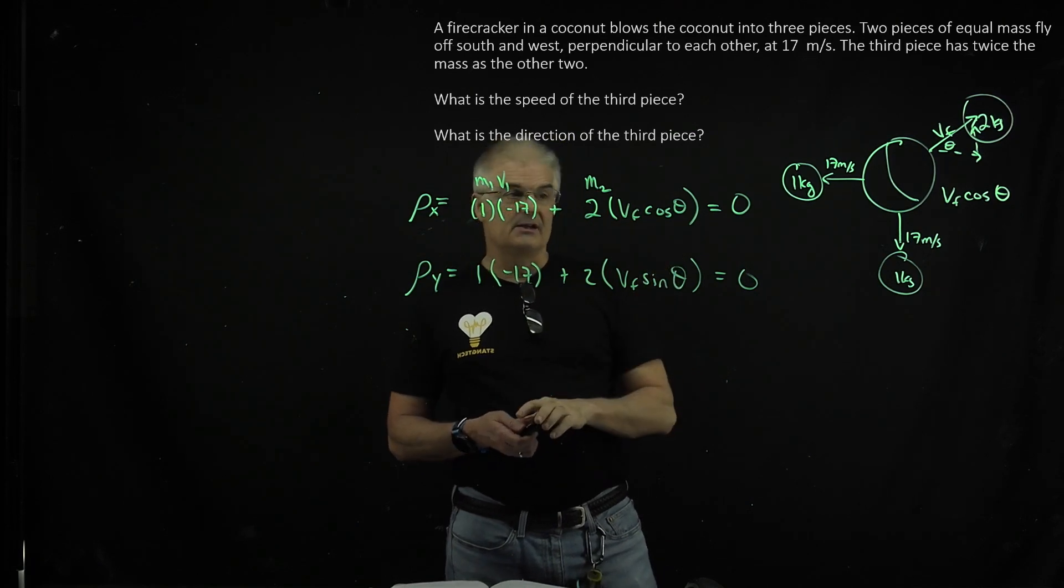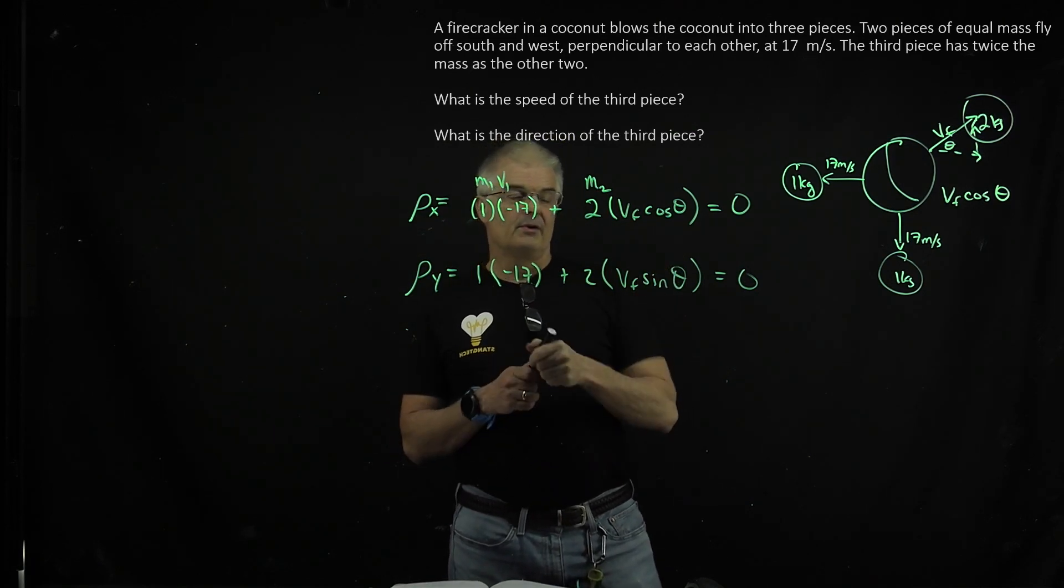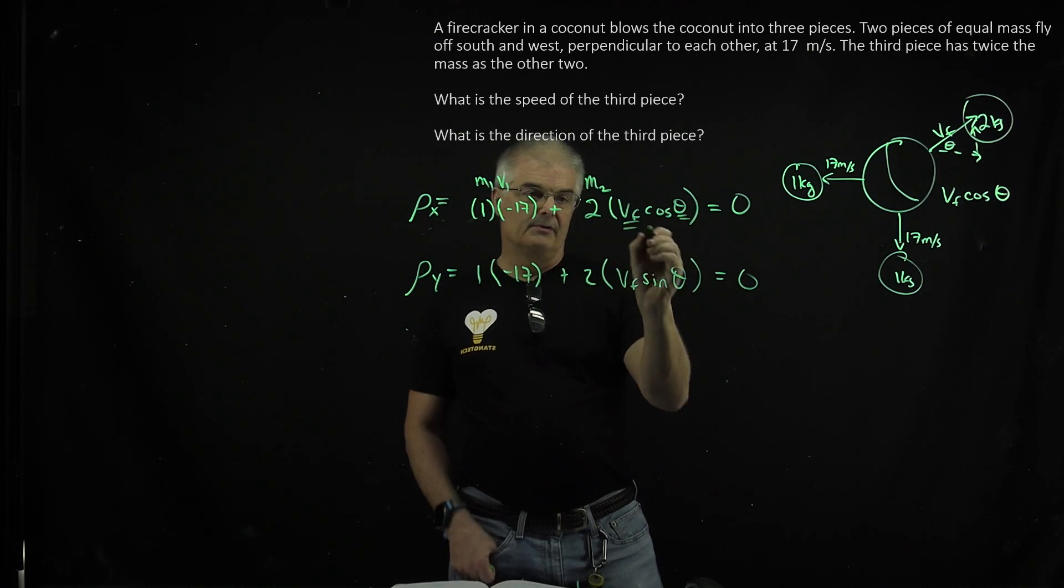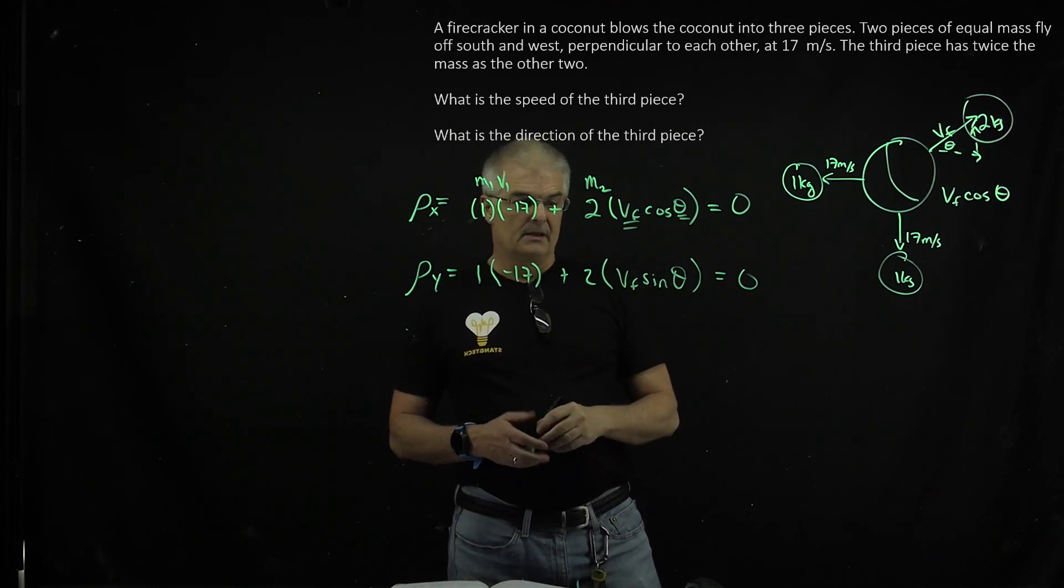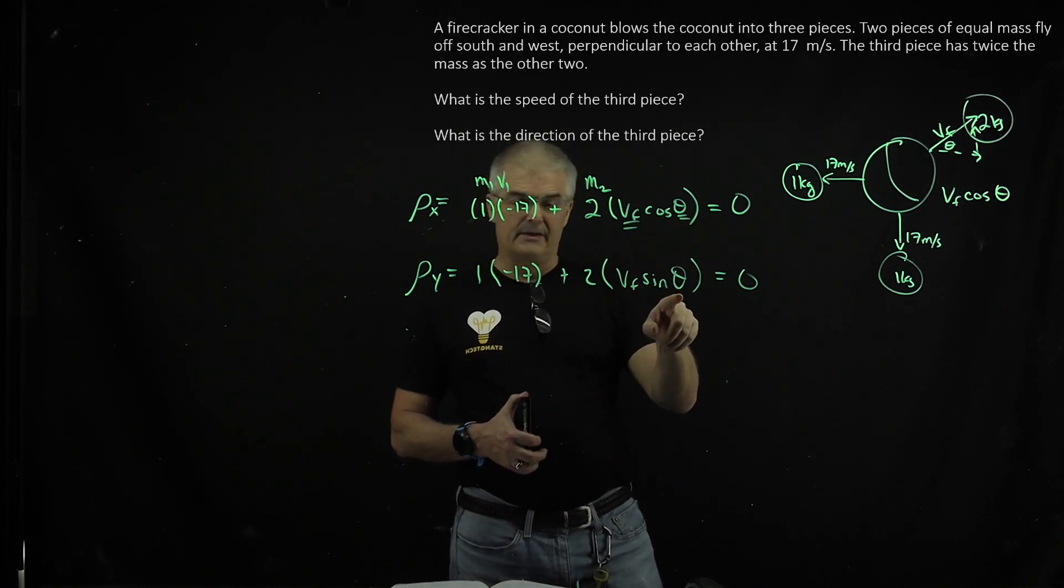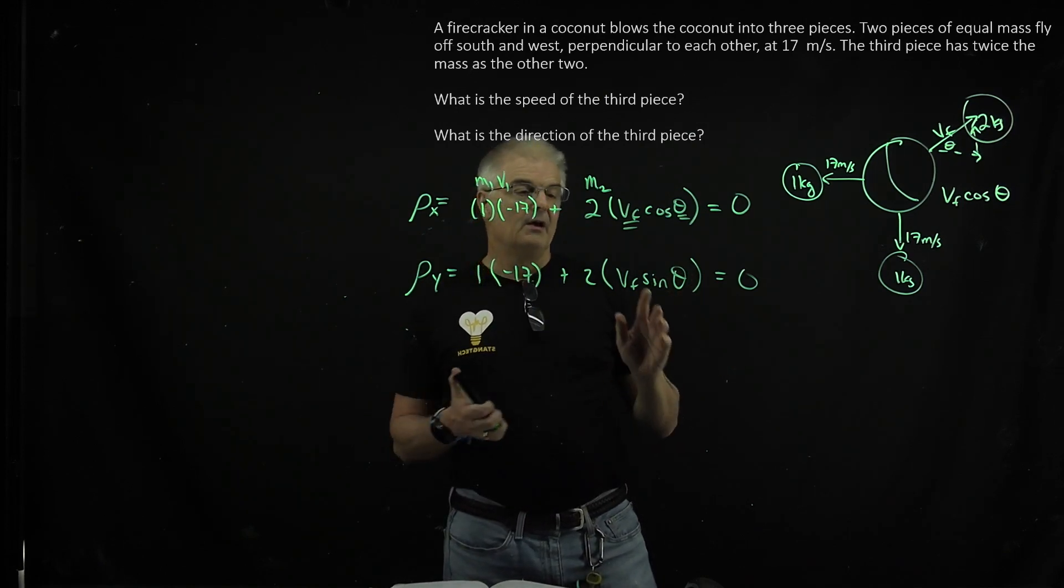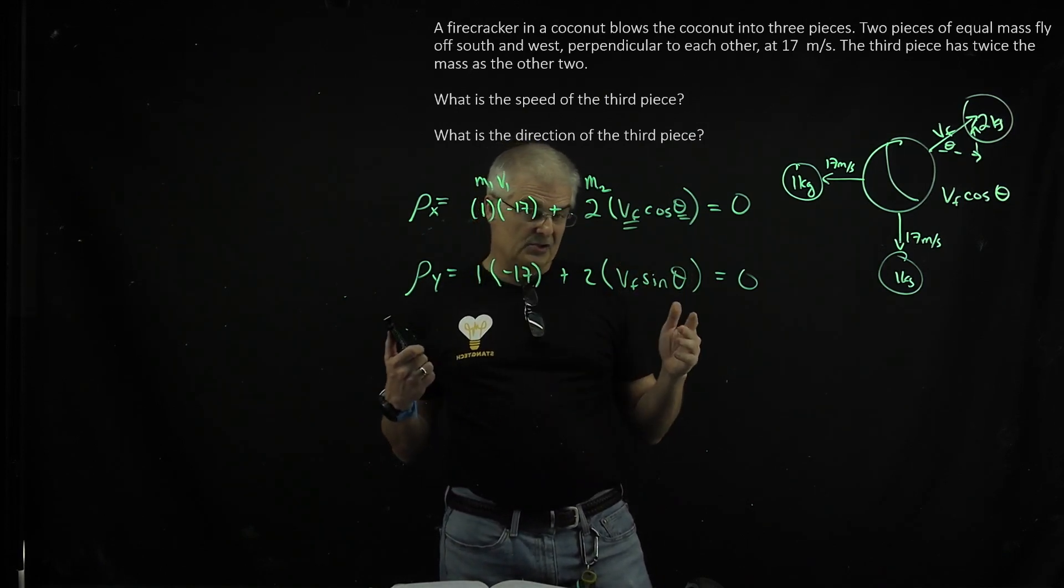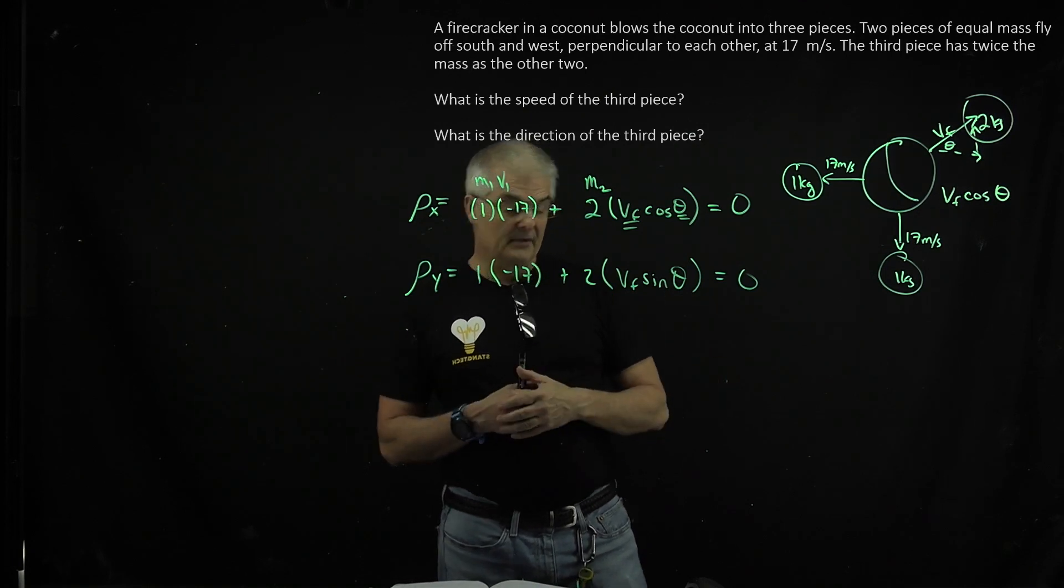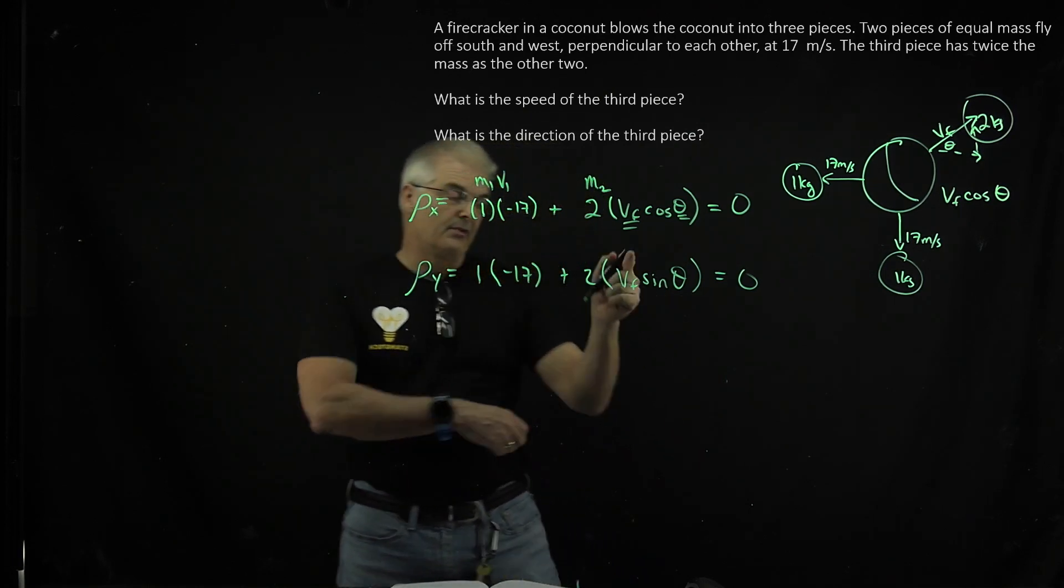We've got cos theta, sine theta, actually, no, we have two variables, don't we? We don't know what the theta is, and we don't know what the v final is. We've got v final and theta, so what we want to do is we want to plug into our equation, we're going to solve for one thing. So let's solve for the amount of velocity or the theta. I guess I'll solve for the theta first.